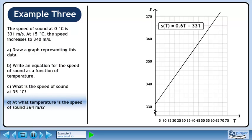In part d, we will find the temperature when the speed of sound is 364 meters per second. If the speed of sound is 364 meters per second, we can plug this in for s and solve for t.